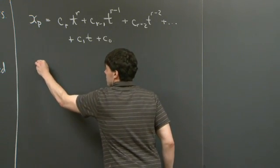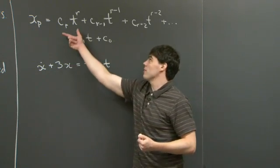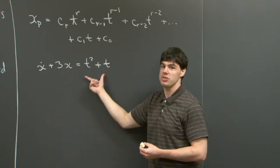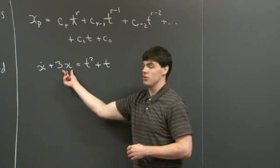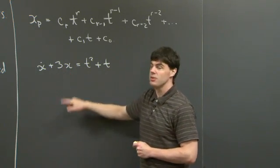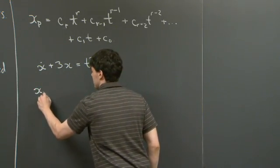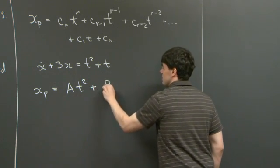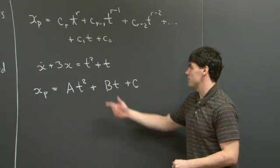For our first differential equation, we have x-dot plus 3x equals t squared plus t. The power r that we should guess for a solution is always going to be at least as high as the highest power on the right-hand side. Sometimes we have to knock it up a few orders depending on what the lowest order derivative on the left-hand side is. In this case there's no constant multiple issue, so we take r equal to 2. We seek an ansatz: a t squared plus b t plus c.